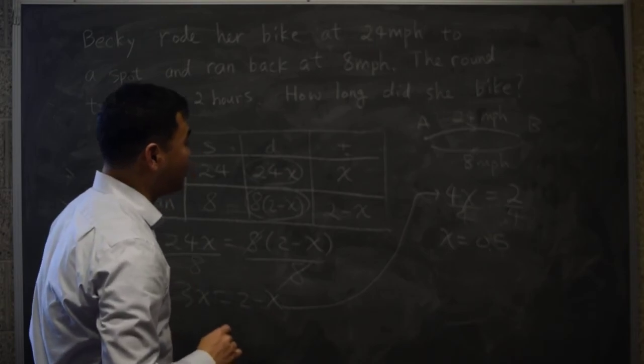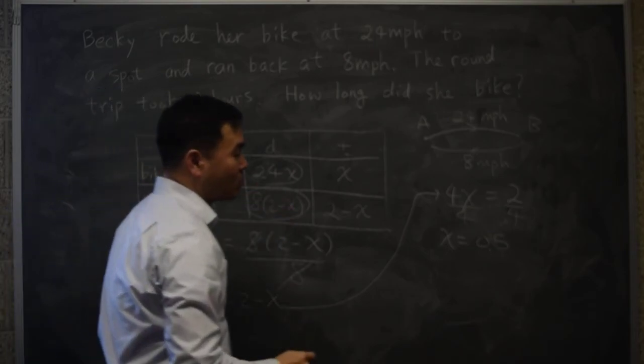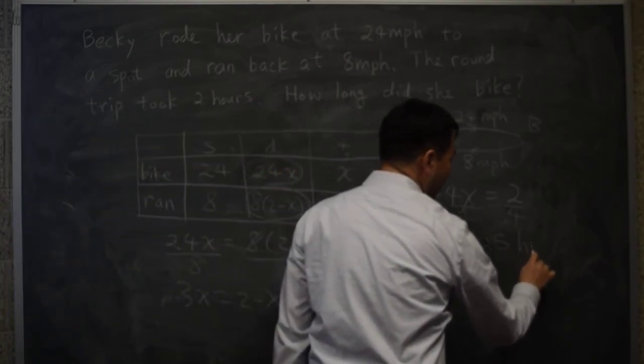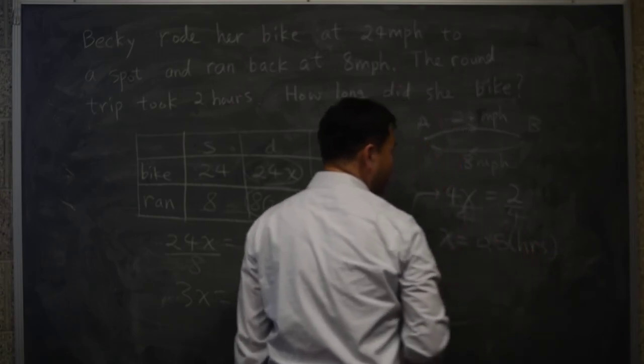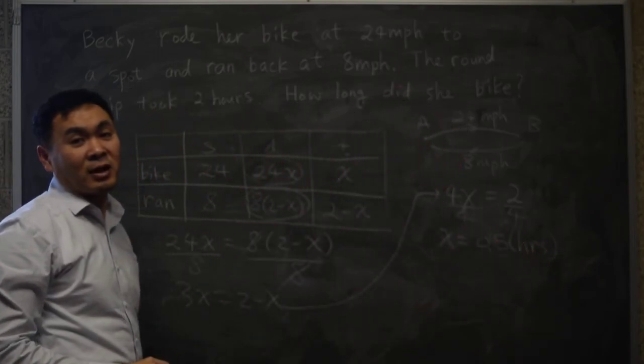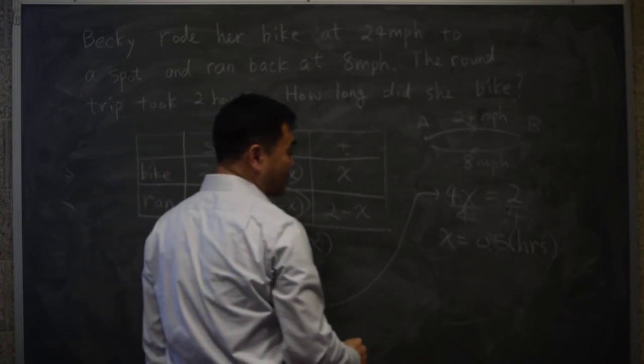And since x is the time that she took the bike, we're measuring time in hours. So the answer is 0.5 hours or 30 minutes. That's the answer.